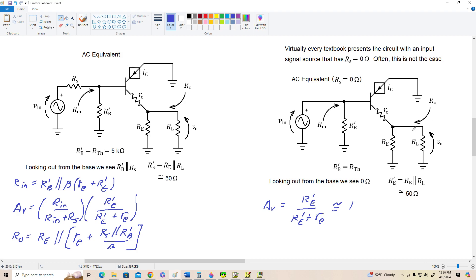Alright, and finally, the output resistance equation is going to be simplified dramatically too, because now the voltage source driving the amplifier provides a path to ground through its internal resistance of zero. So everything in the base is zero ohms, and we end up with R out equals RE in parallel with little RE.